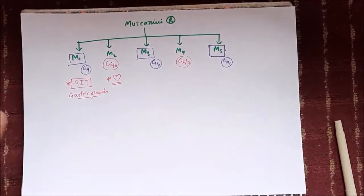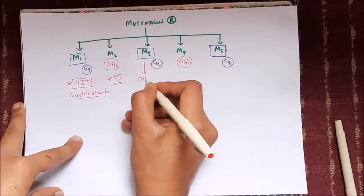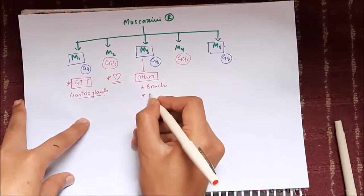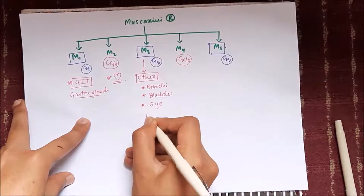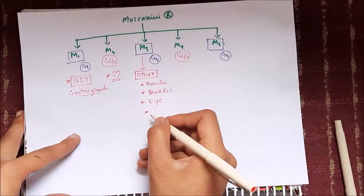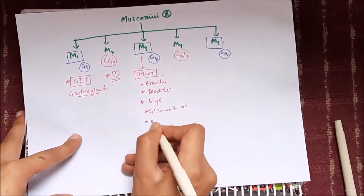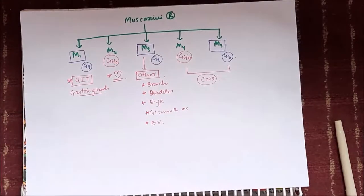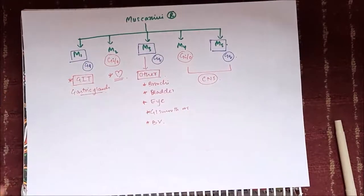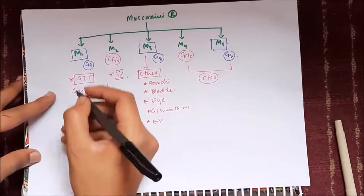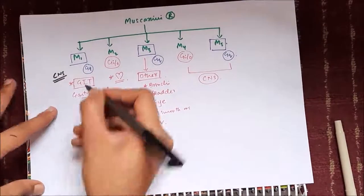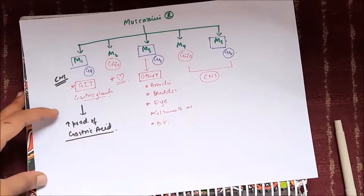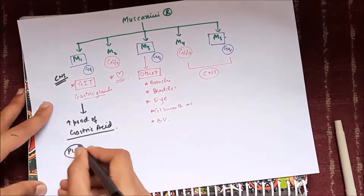M2 receptors are predominantly present in the heart. M3 receptors are present at other places including bronchial smooth muscle, bladder detrusor muscle, circular muscle of the iris, various glands, and GI smooth muscle. M4 and M5 are complex receptors present in the central nervous system and regulate release of neurotransmitters.